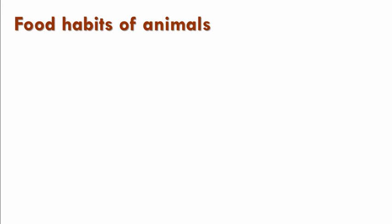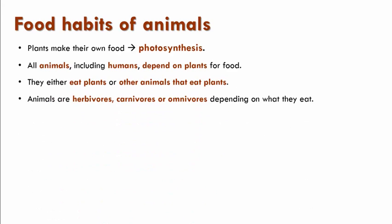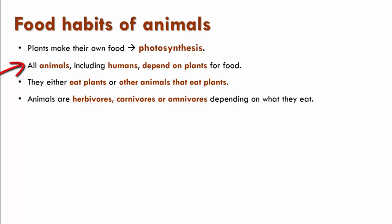Let us now look at the various food habits of animals. Plants make their own food by the process of photosynthesis, using carbon dioxide and water in the presence of sunlight. All animals including humans depend on plants for food since they cannot make their own food.